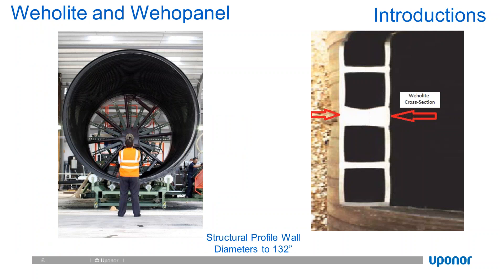A little bit about Weholite and Weopanel. Weholite is a robust structural box cross-section—a heavy-duty box or I-beam cross-section. The modulus of the box section is extremely rigid, and we rely upon that to develop large-scale pipe applications. We're able to produce Weholite pipe in diameters up to 132 inches, and depending on the diameter, we can accommodate fill heights nearing 50 feet. Not to be confused with lighter gauge materials like corrugated exterior smooth interior HDPE, which is limited to about 5 feet in diameter and about 6 to 8 feet in cover height.